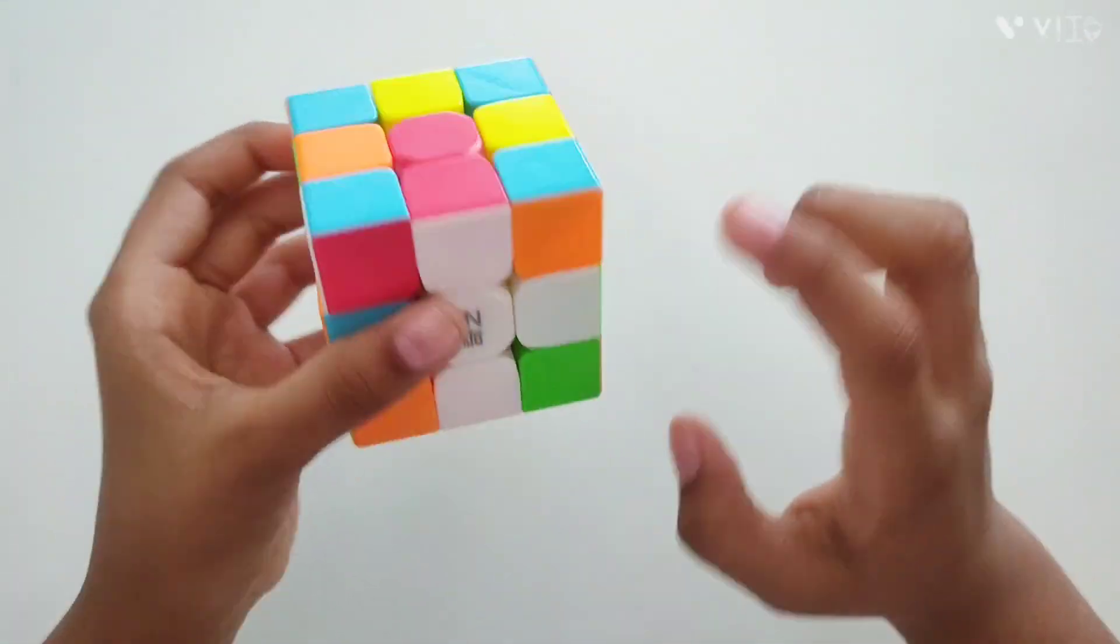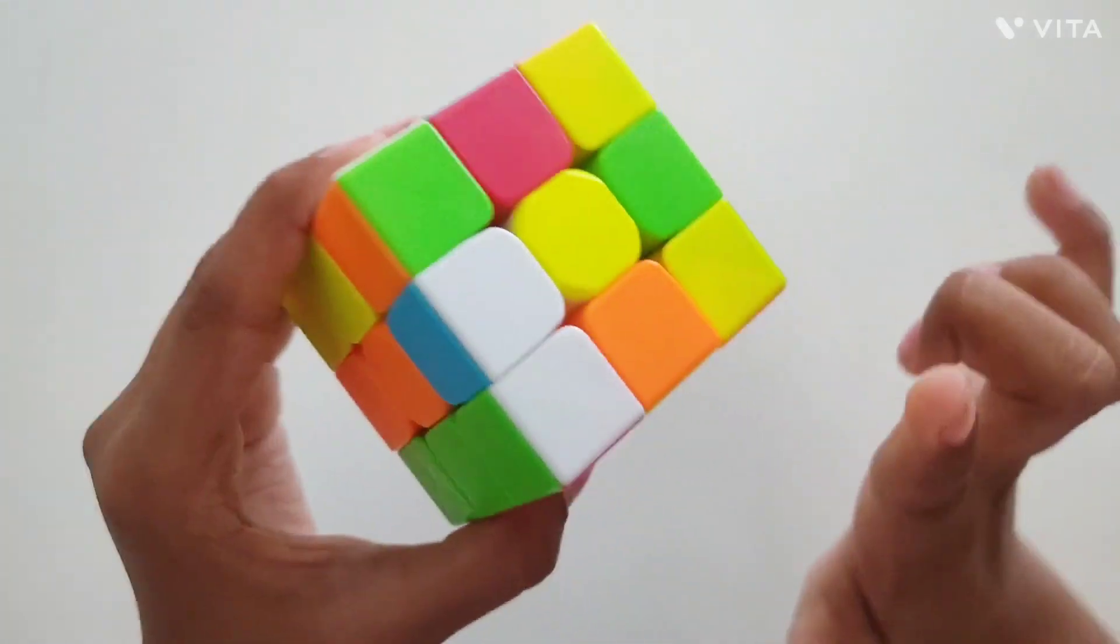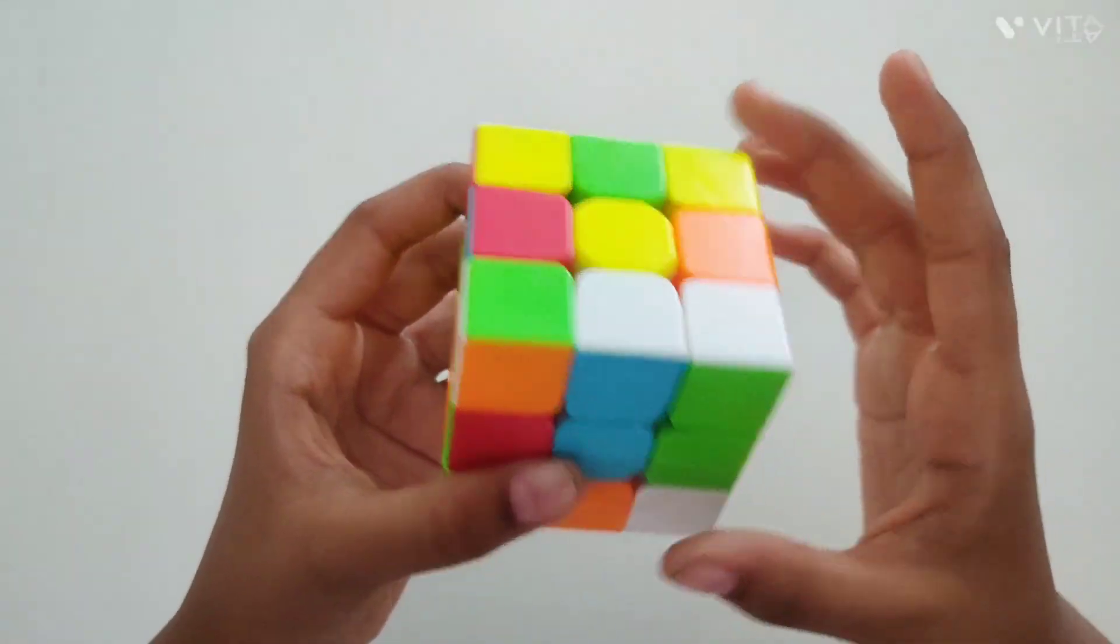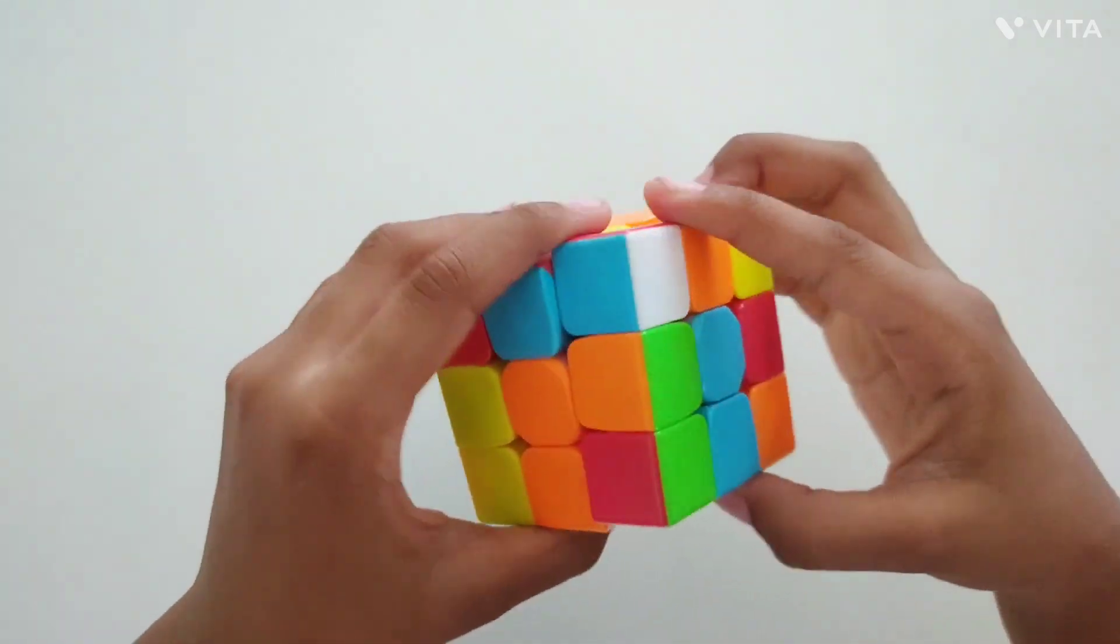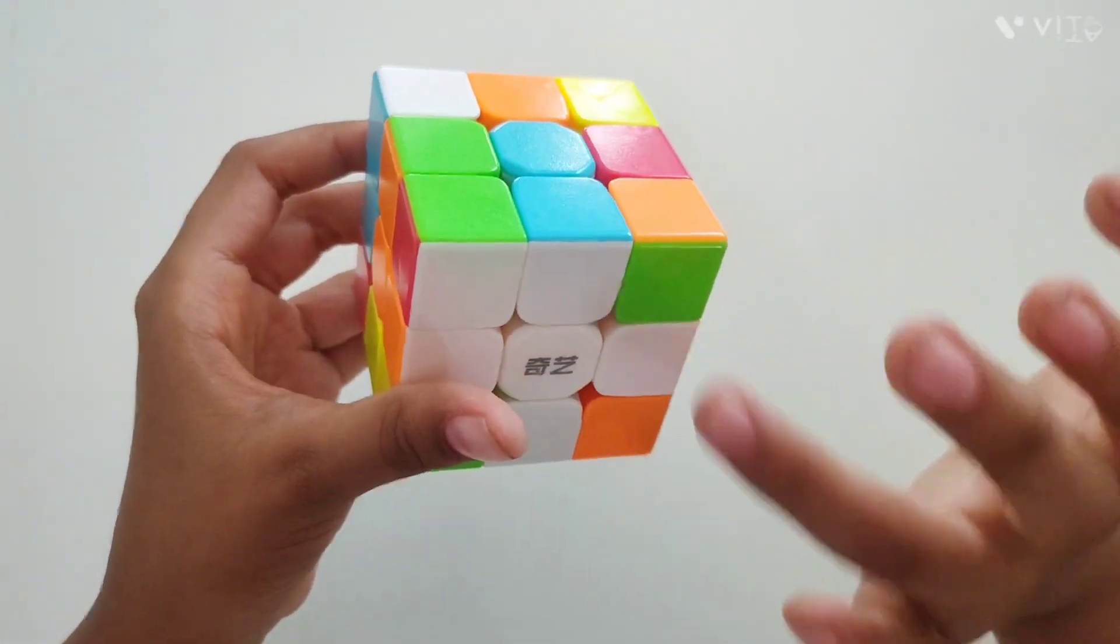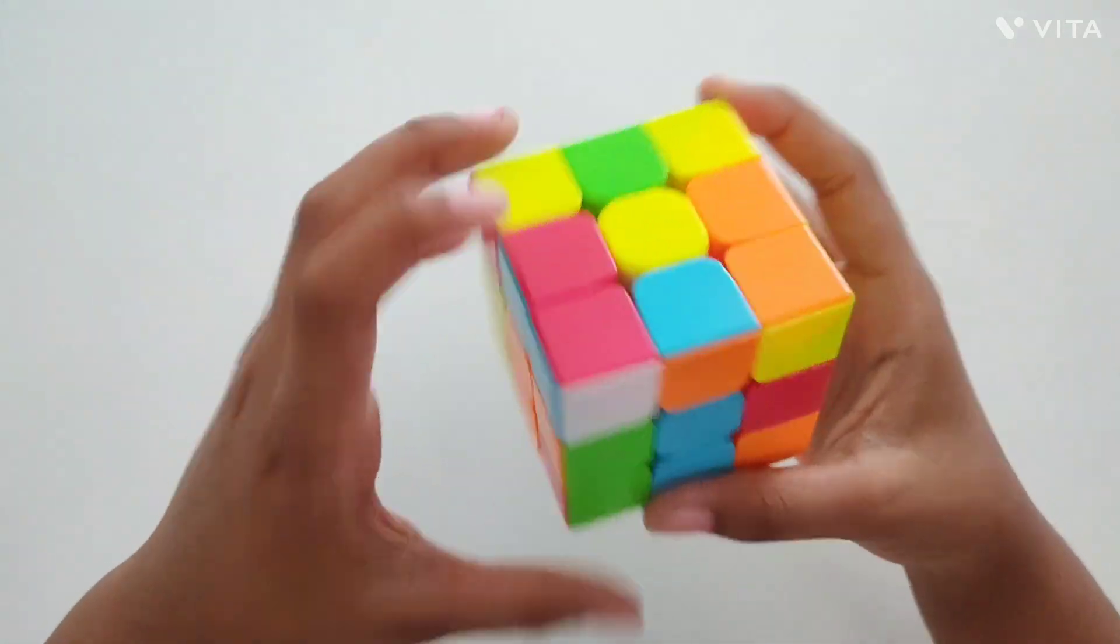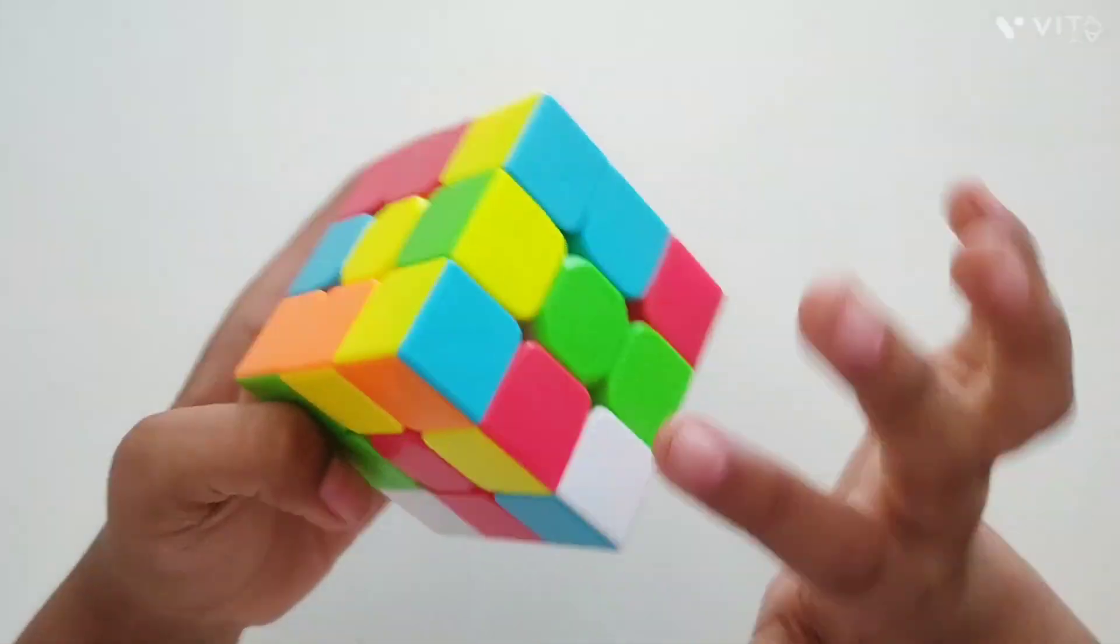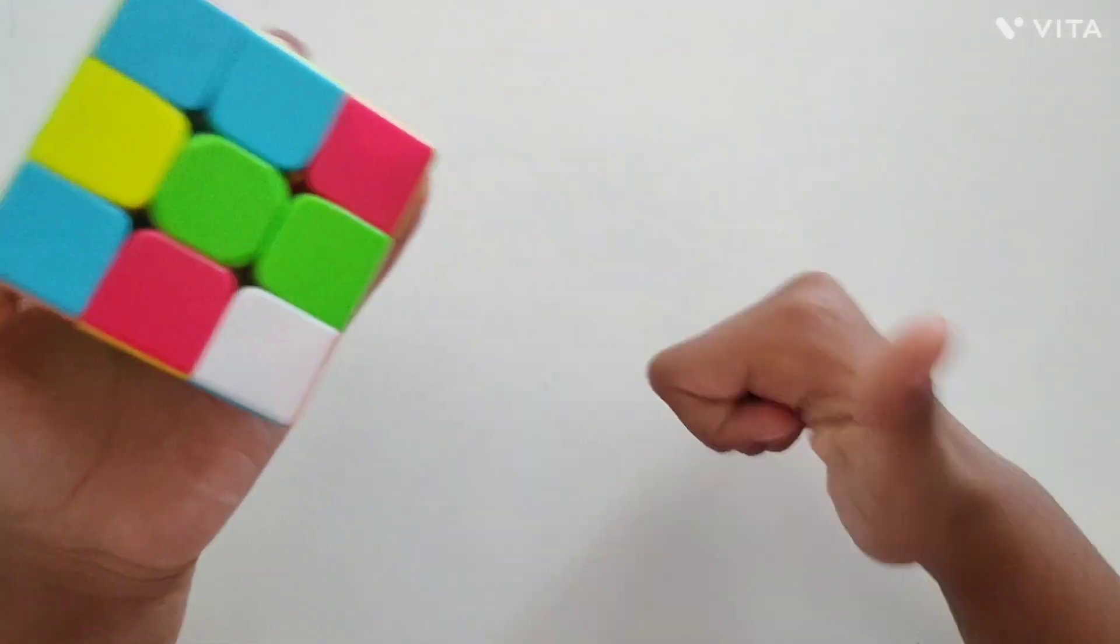One, two, went down. Now the last one is the blue. Let's take it down. One, two, okay? Now the white cross is done with the same edge piece and the center piece matched.